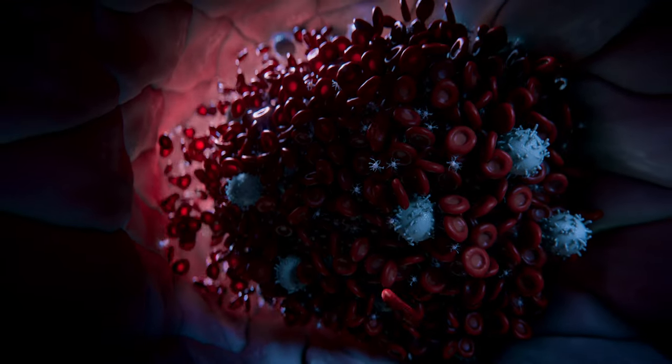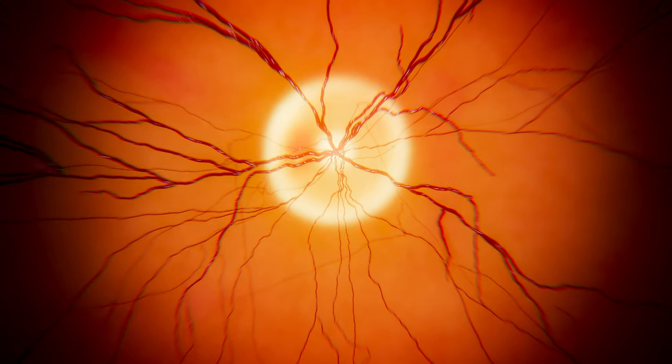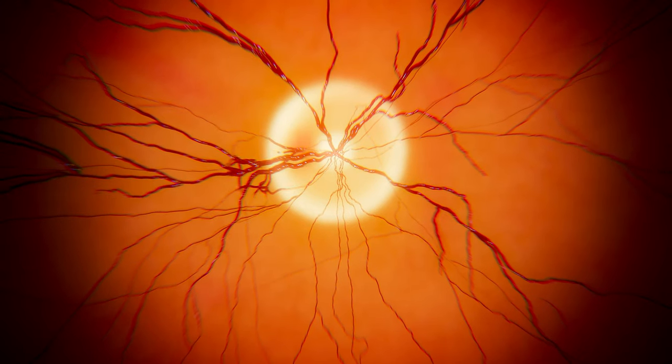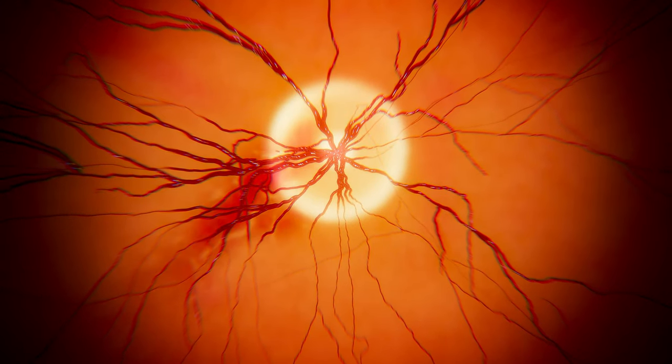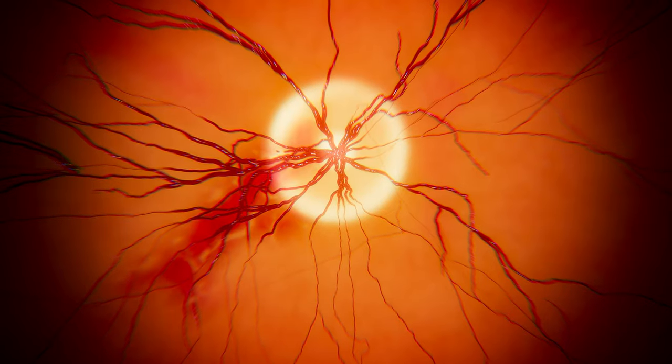These sticky cells can form a blockage in the vein at the back of the eye, resulting in inflammation, cell damage, swelling and pressure on the nerves. Such a blockage can eventually lead to loss of vision and, in some cases, blindness.